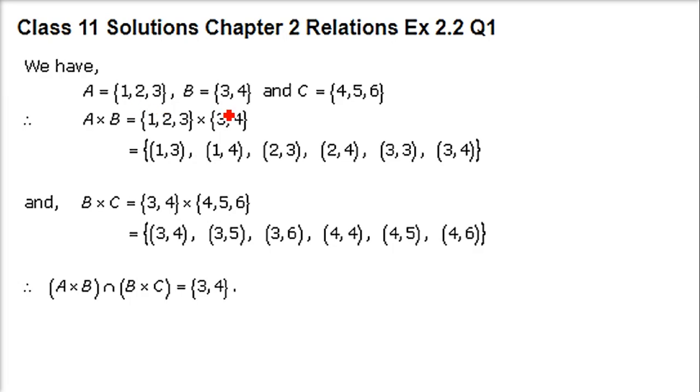A is given as 1, 2, 3. B is given as 3, 4. And C is 4, 5, 6. We have to find A cross B intersection B cross C.